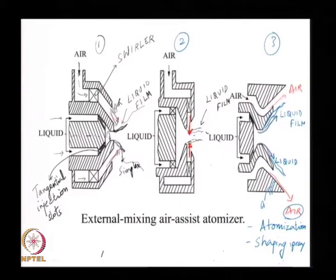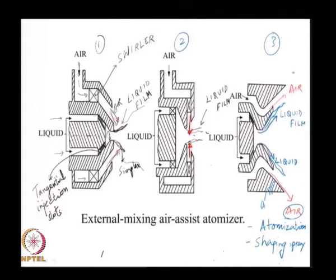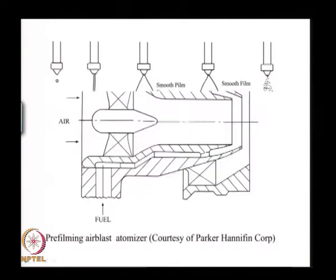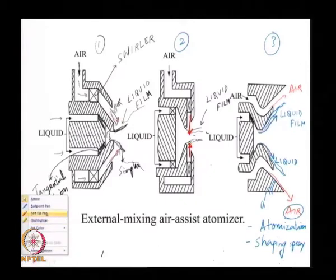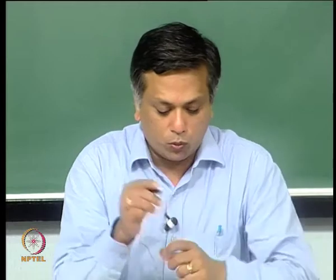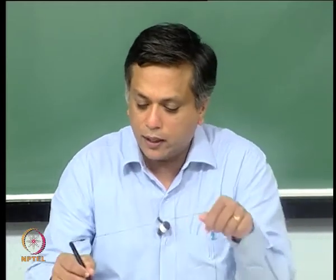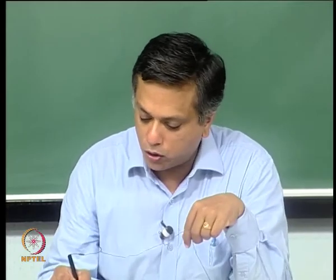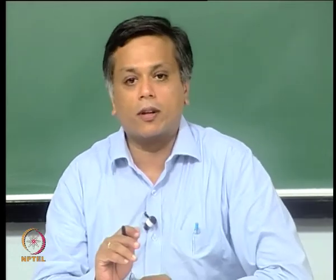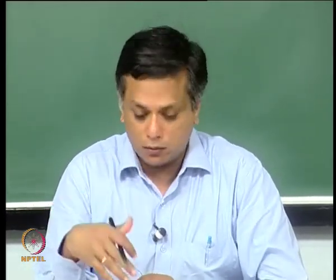Good morning. We started to look at air assist atomization towards the end of the last class. We looked at three different configurations of air assist atomizers, essentially varying in the angle at which the air is introduced towards the liquid sheet. The advantage of the third design is that by varying this angle theta independently, I can also control the shape of the spray — meaning the spray angle. So let us make a list of a few different things that differ from spray nozzle to spray nozzle, which we will use qualitatively to differentiate the nozzles we are going to talk about today.